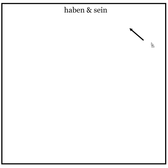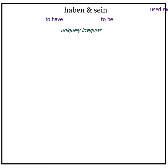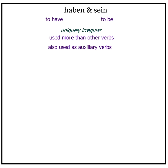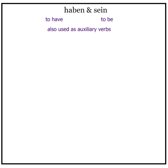Haben und Sein. The verbs haben, to have, and sein, to be, are two very important verbs. They are irregular in their own unique way, and you'll use them more than any other verbs in German. Haben and sein are important because they are also used as auxiliary verbs — that is, helping verbs — in the present perfect tense.